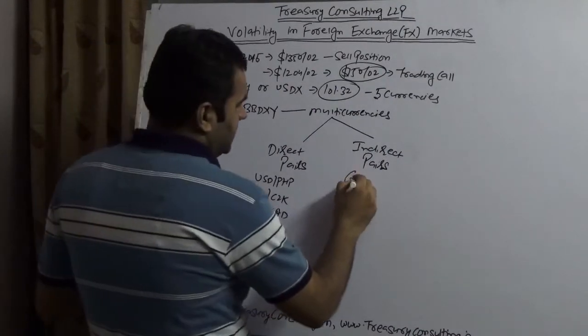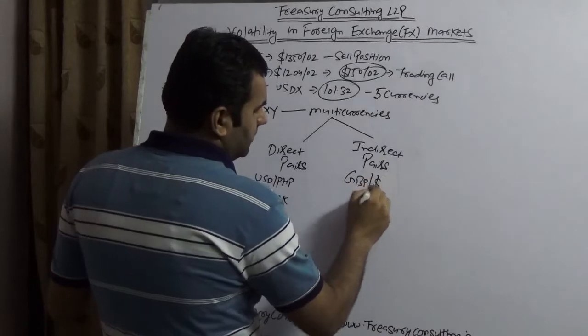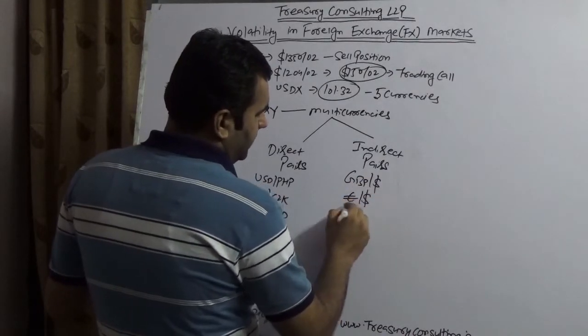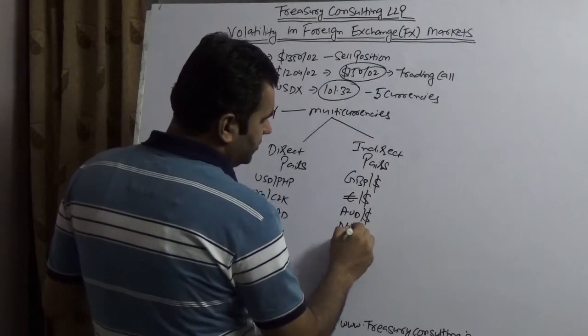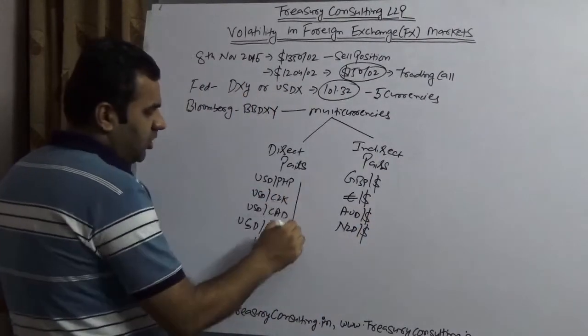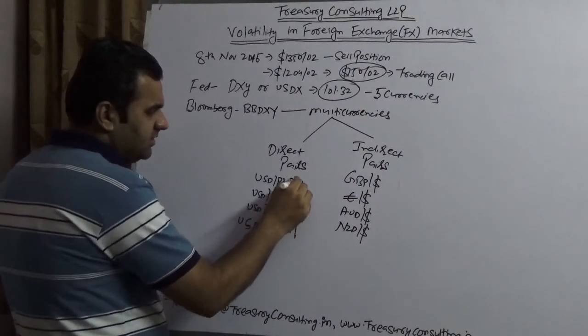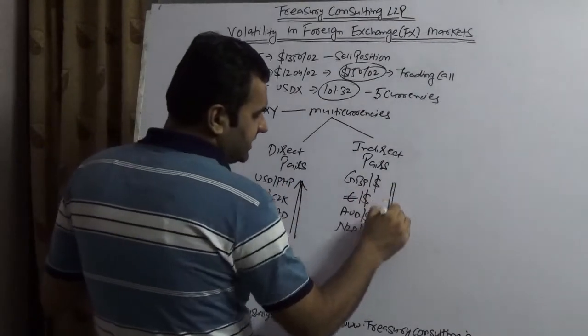All directs are rising nowadays. All indirects, GBP dollar, Euro dollar, Aussie dollar and New Zealand dollar, all indirects are falling. So all directs are rising and all indirects are falling.